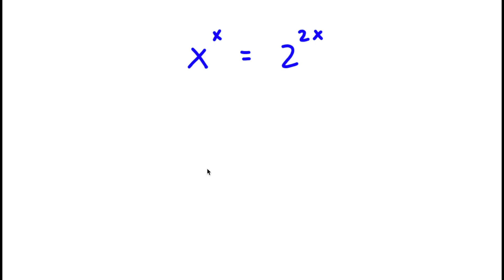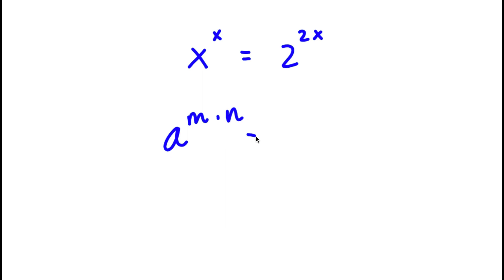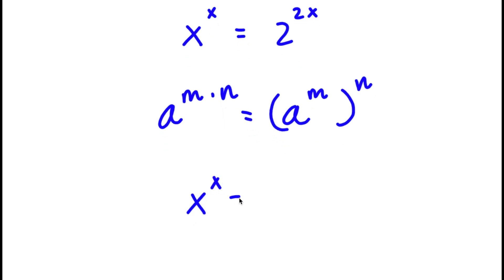Hey guys, welcome back to Click Academics. In today's video, I'm going to be teaching you how to solve this exponential equation. I have x to the power of x is equal to 2 to the power of 2x. If I have something in the form a to the power of m times n, this is the same thing as a to the power of m to the power of n. So 2 to the power of 2x, I'm going to rewrite that as 2 to the power of 2 to the power of x.